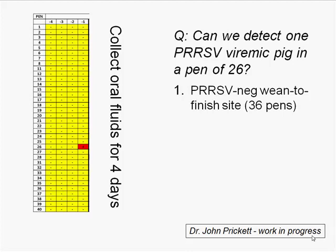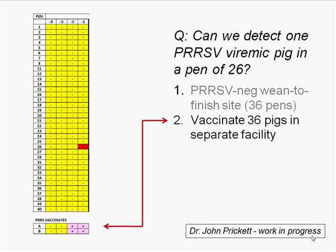We went to a PRRS-negative site representing one wean-to-finish barn with 36 pens. Oral fluid samples were collected Monday through Thursday — we had one false positive, consistent with my experience. On Monday, 36 pigs — one from each pen — were moved to a different building and vaccinated with MLV. They tested negative Monday and Tuesday, then positive Wednesday and Thursday. Thursday night, these 36 viremic pigs were moved back into the pens — one viremic pig per pen of 26 pigs.